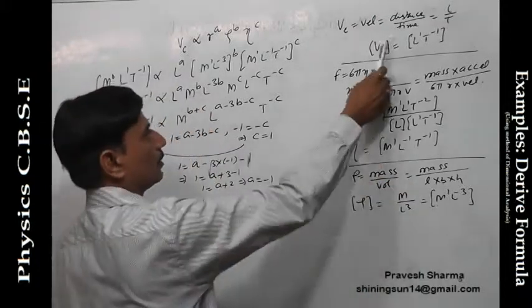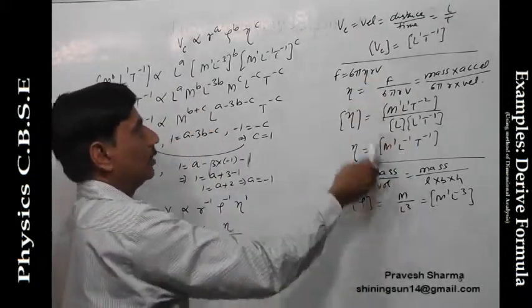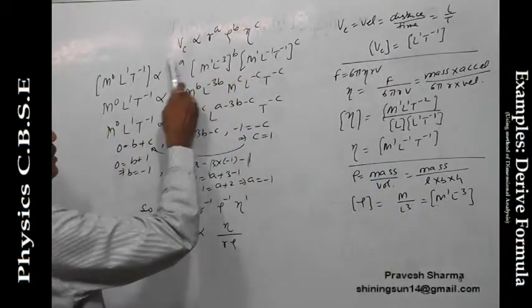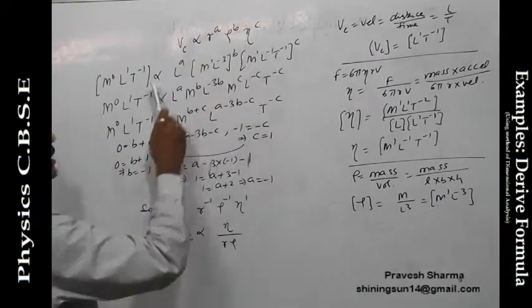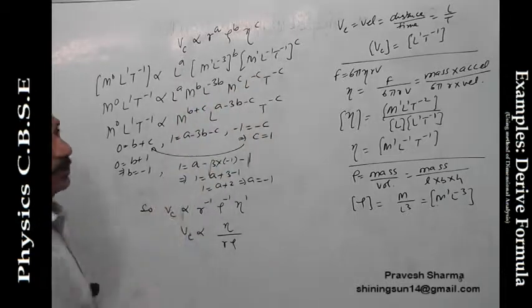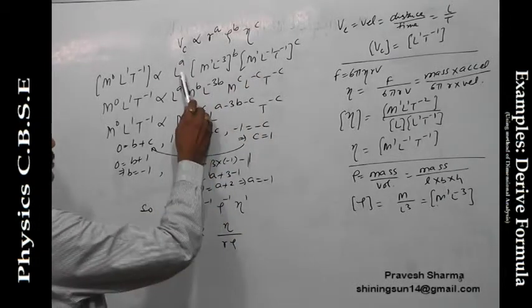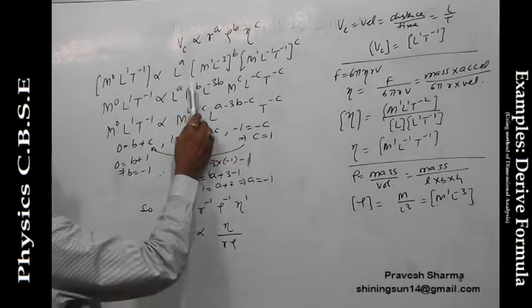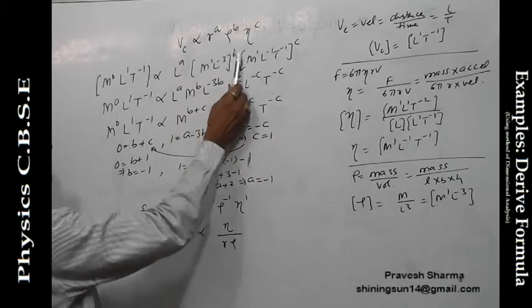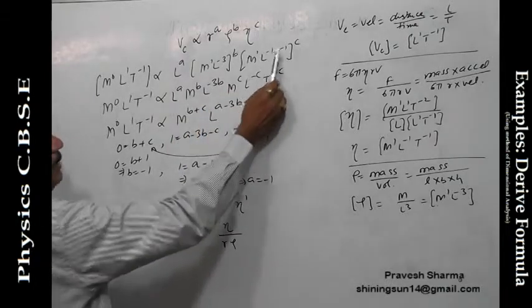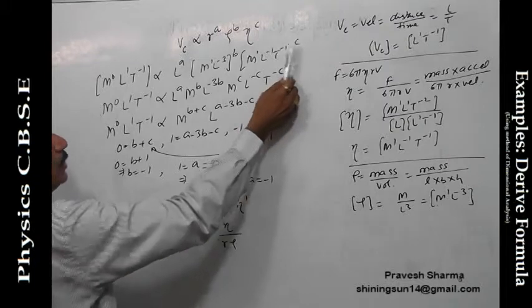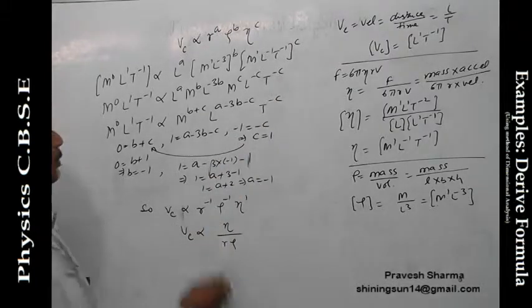We put the dimensional formula for these quantities over here: Vc, r, rho, and eta. When we put over here, we get this expression. You open the brackets, we get L to the A, M to the B, L minus 3B, M to the C, L minus C, T minus 1 times C.